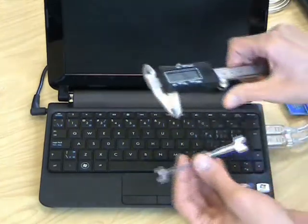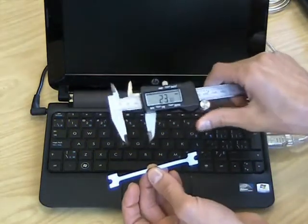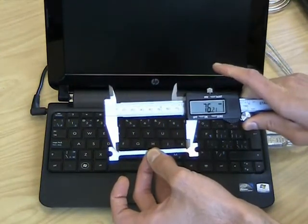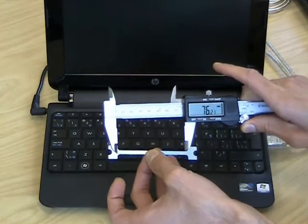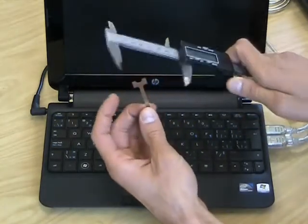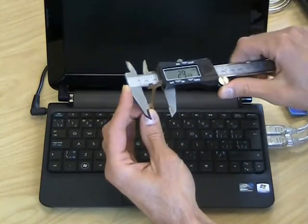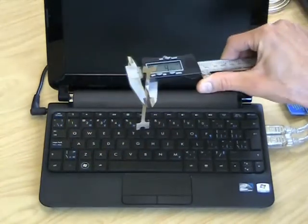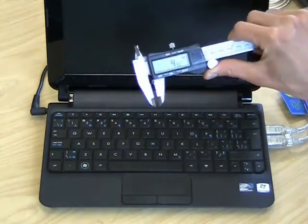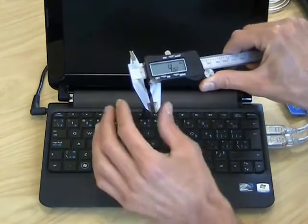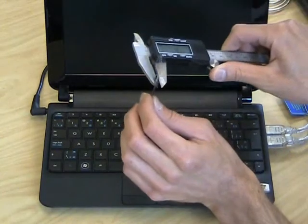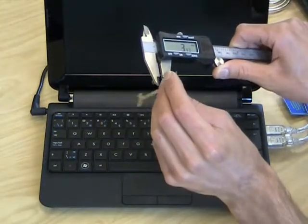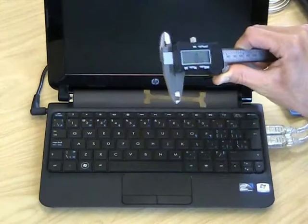To measure the length of the coupon, use the thumb wheel on the caliper to slide the jaws open. Measure along the thin main section of the coupon. To measure the width of the tensile coupon, close the jaws so that they just hold the tensile coupon in place. Do not close the jaws so tightly that they bend the tensile coupon. To measure the thickness, same thing. Don't forget to record these measurements in the table on your answer sheets.